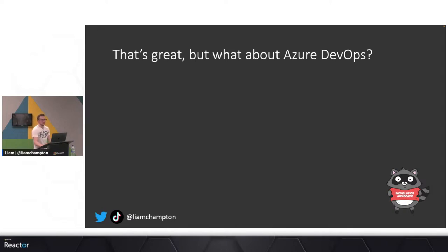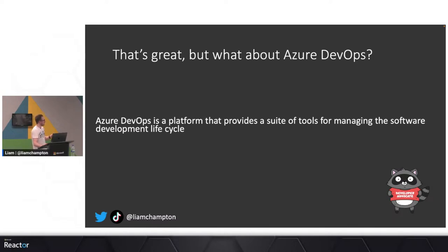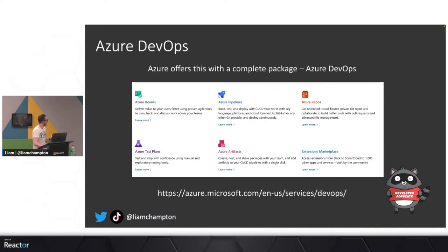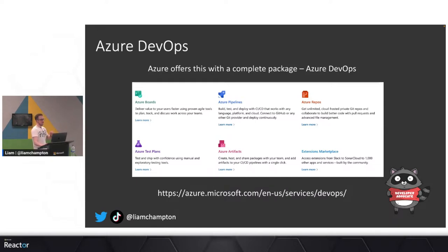I've been speaking for 25 minutes, and now I'm going to show you what Azure DevOps is. Microsoft decided to make a product named after our entire tech sector. Azure DevOps is a platform that provides a suite of tools for managing the software development lifecycle — basically everything we've just been through in one product. We have Azure Boards, Azure Pipelines, Azure Repos, Azure Test Plans, and Azure Artifacts, plus extensions for Jenkins, GitHub, Ansible, Terraform, and Kubernetes.